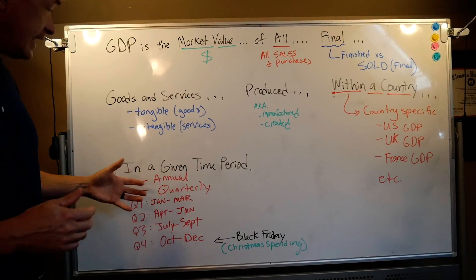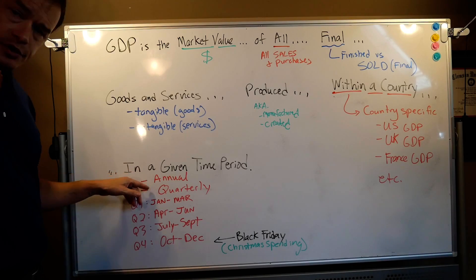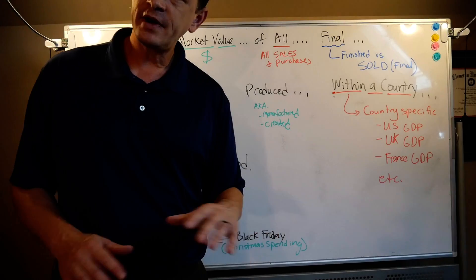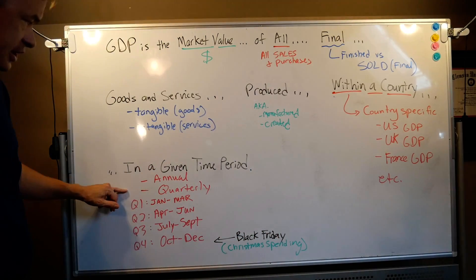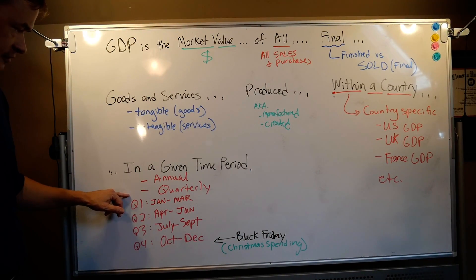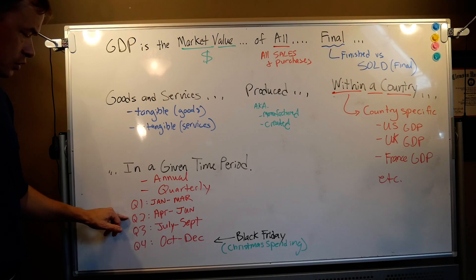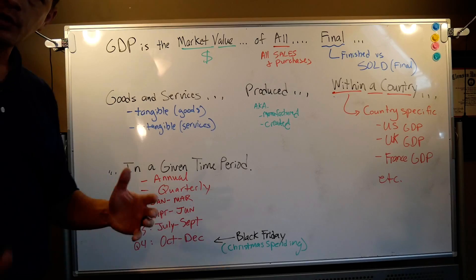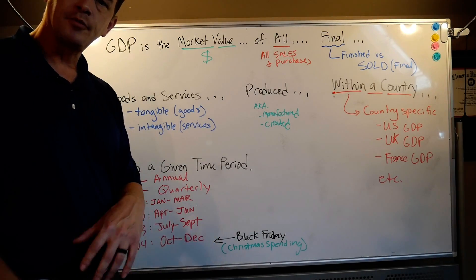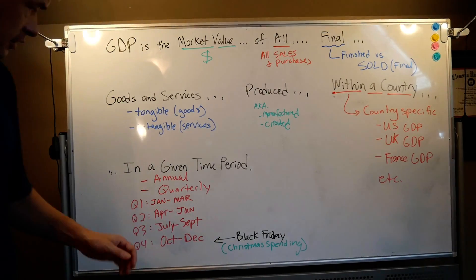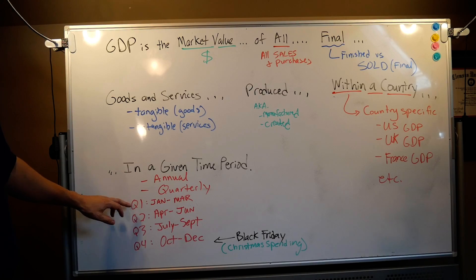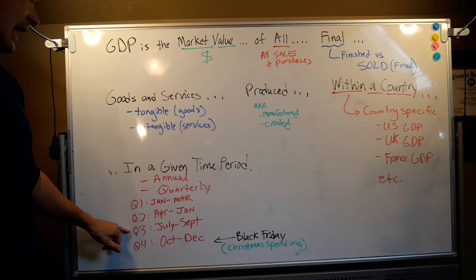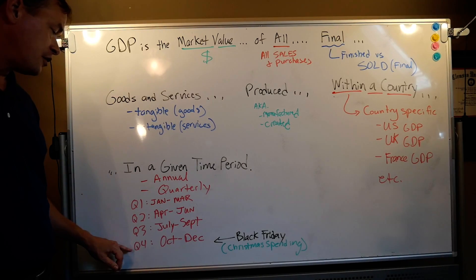In a given time period — usually GDP is expressed in annual figures. However, do you want to go a whole year to figure out how your economy is doing? No. We largely go quarterly. You'll hear GDP reported as quarterly figures: quarter one is January through March, quarter two is April through June, quarter three is July through September, and quarter four is October through December.